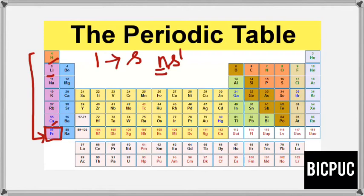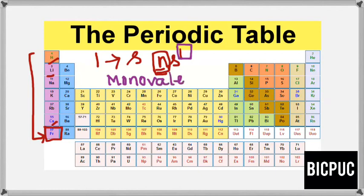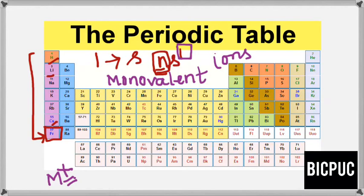N represents the valence shell. These elements can lose the one electron present in their valence shell and form monovalent ions — ions having a single positive charge. They form cations, which are positively charged ions. They are called monovalent ions because they carry only a single positive charge. This is about their electronic configuration.